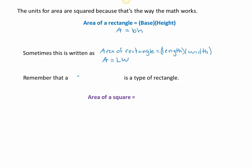A square is a special type of rectangle. Rectangles are parallelograms with four 90-degree angles, and a square has that — it just happens that all four sides are the same length. If we think of a square as a rectangle and multiply base times height, x times x gives us x². So for the area of a square, we take the side length and multiply it by itself, which means squaring it. The formula is A = x², but it's exactly the same as base times height.